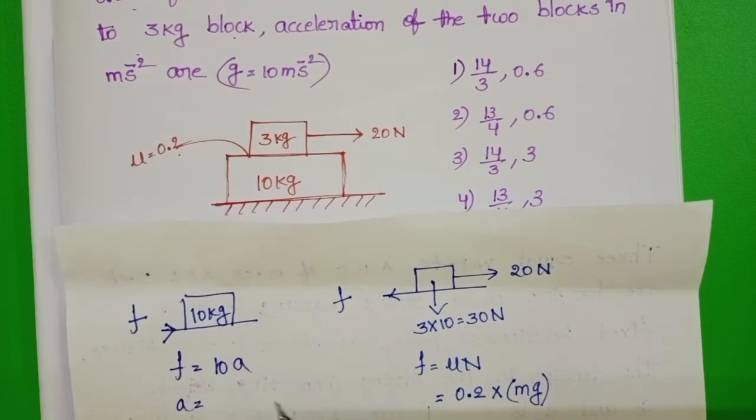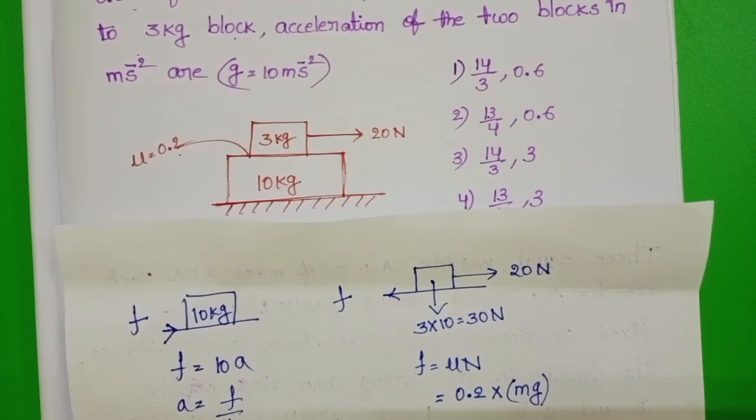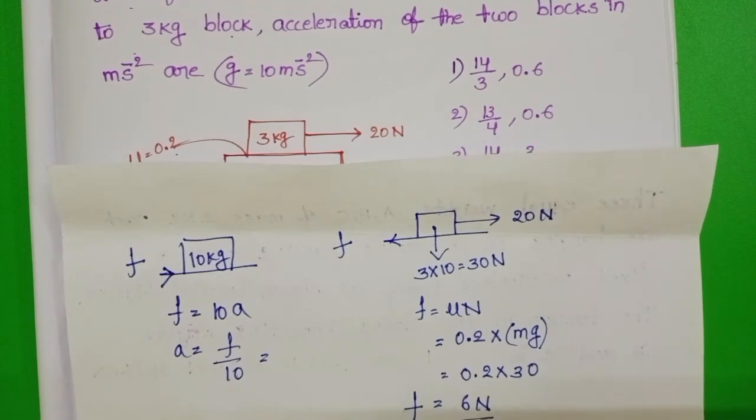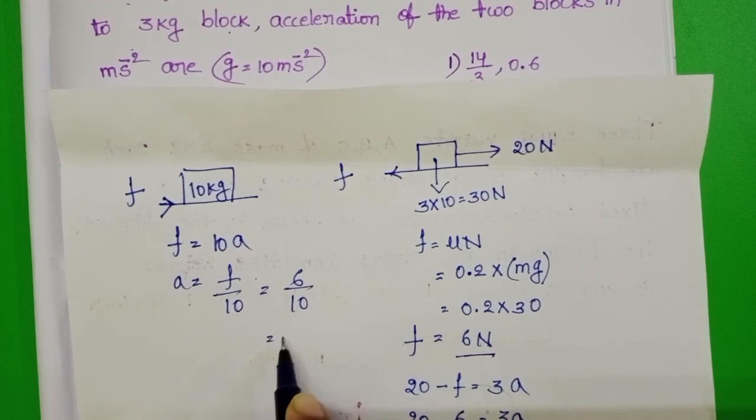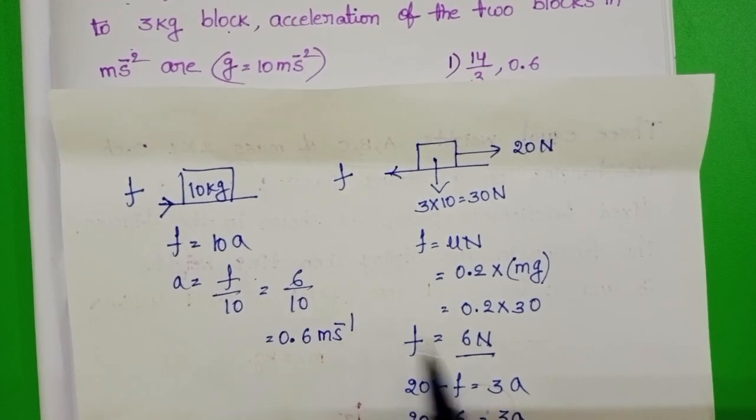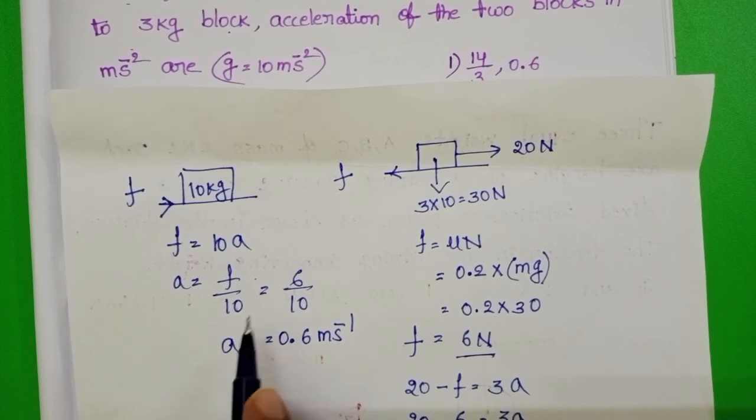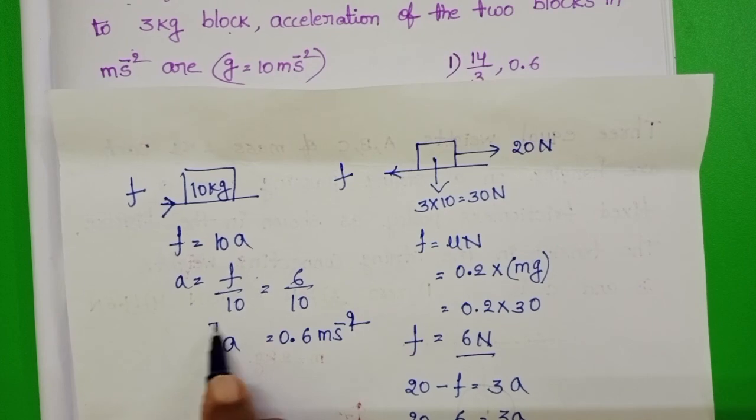A equals F by 10. F equals 6 N. Substitute here: 6 by 10, that equals 0.6 m per second square. So, acceleration of 10 kg block is 0.6 m per second square.